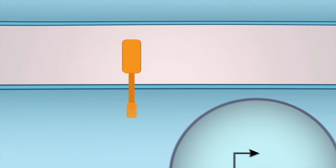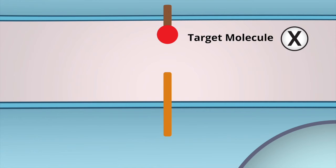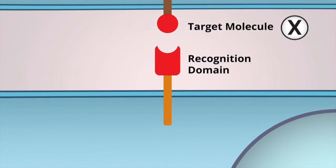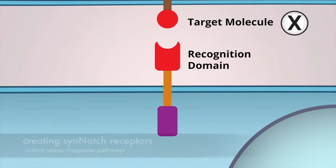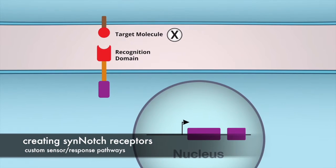What is remarkable is that you can remove the sensing and response domains from Notch and replace them with different recognition or transcriptional domains, creating a synthetic Notch — or what we call a SynNotch receptor.